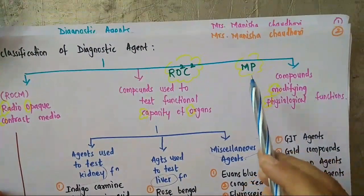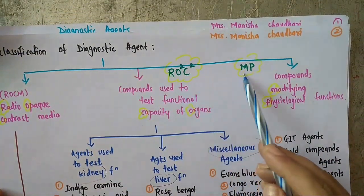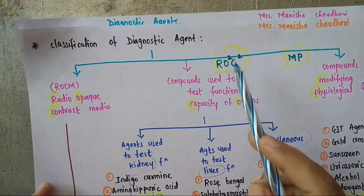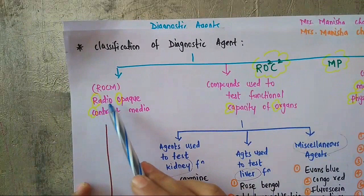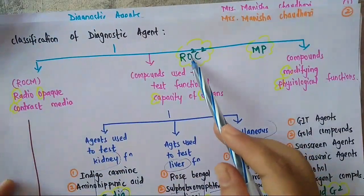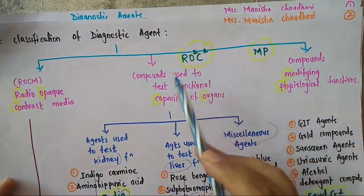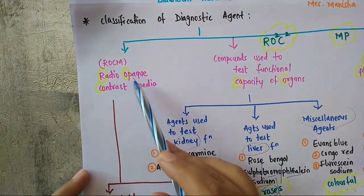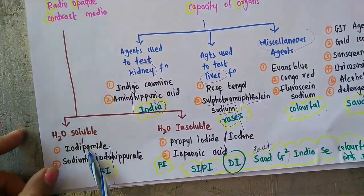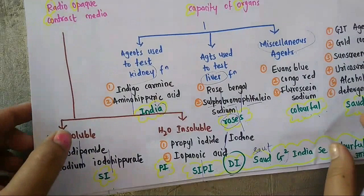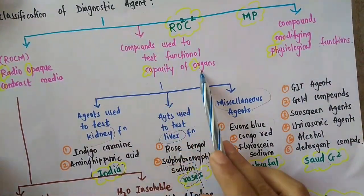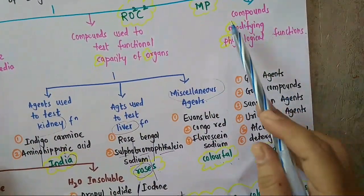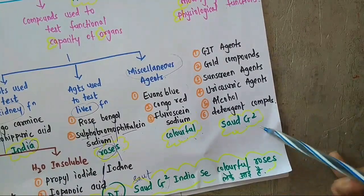MP is for modifying physiological function. ROC is for Radio Opaque Contrast Media. OC is organ capacity — used to test the functional capacity of the organ. ROC is subdivided into two: water soluble and water insoluble. Functional capacity of organ is subdivided into three: kidney function, liver function, and miscellaneous.